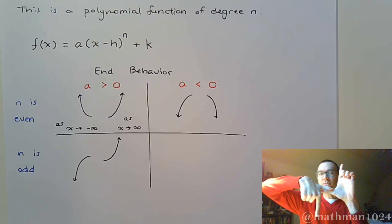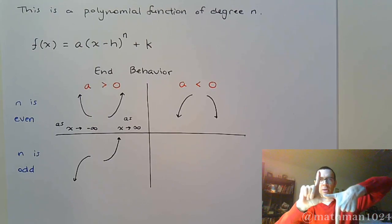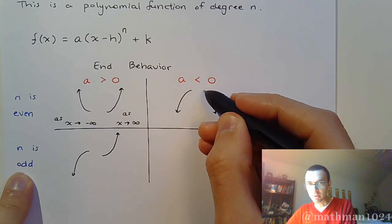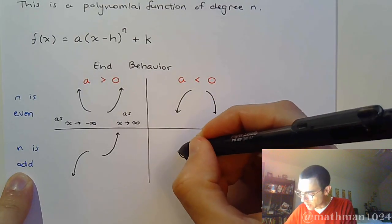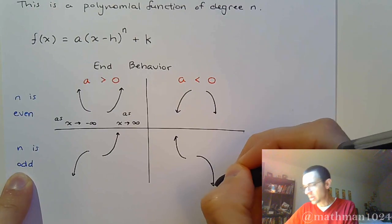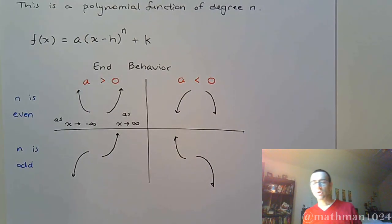If you put a negative in front of that, it turns the cactus upside down. So if the lead coefficient is negative, and you have an odd power, you'll be going up as you go to the left, and you'll be going down as you go to the right. So these are just the end behaviors that we have for these functions.